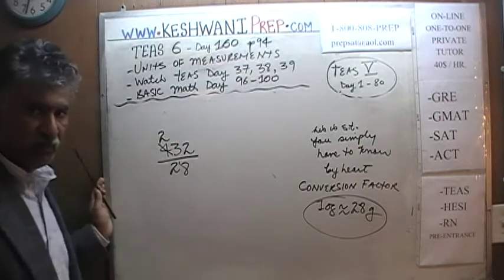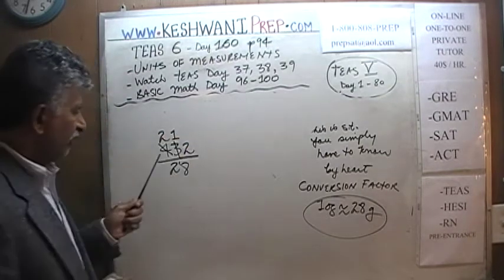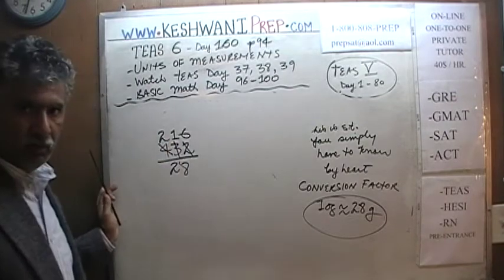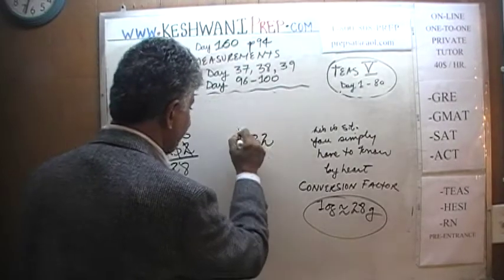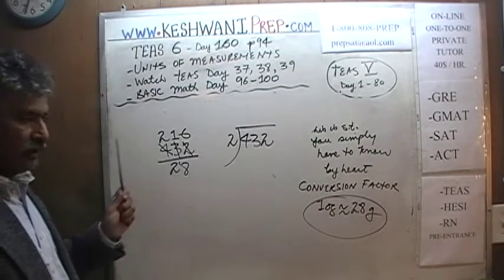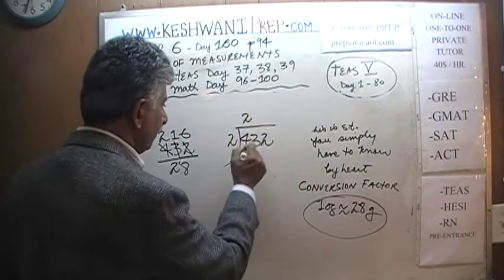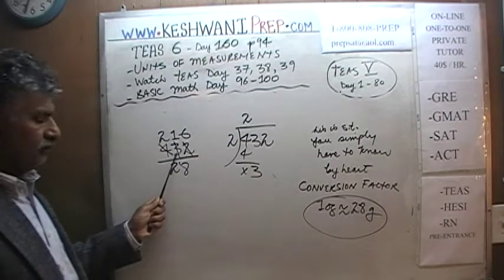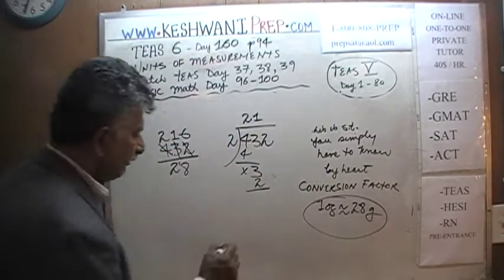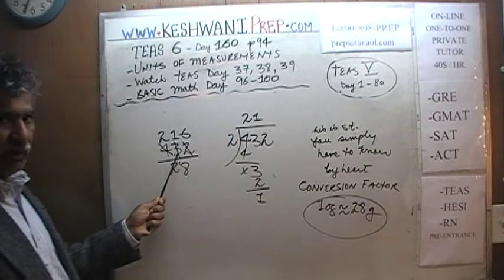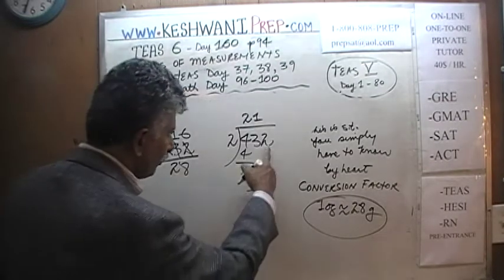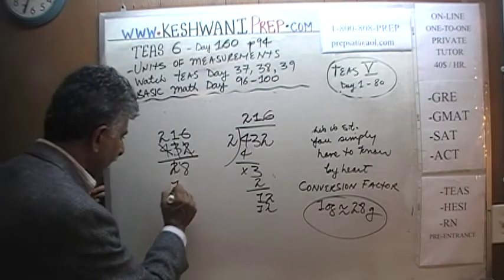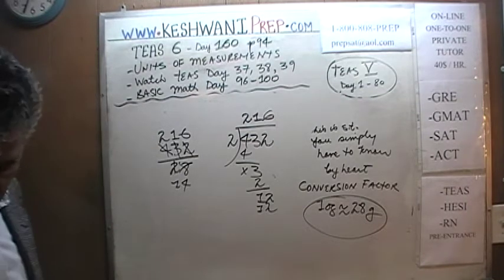Dividing 432 by 2: 4 has two 2s, then 3 has one 2 with a remainder of 1, which joins the 2 to make 12 — and 12 has six 2s. So 432 divided by 2 is 216. And 28 divided by 2 is 14. We notice that 14 and 216 are both even numbers, so we can divide by 2 one more time.